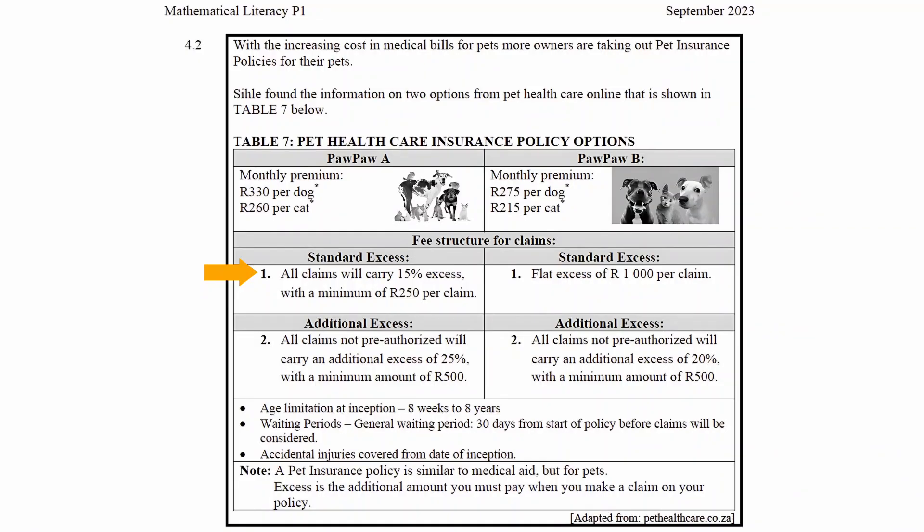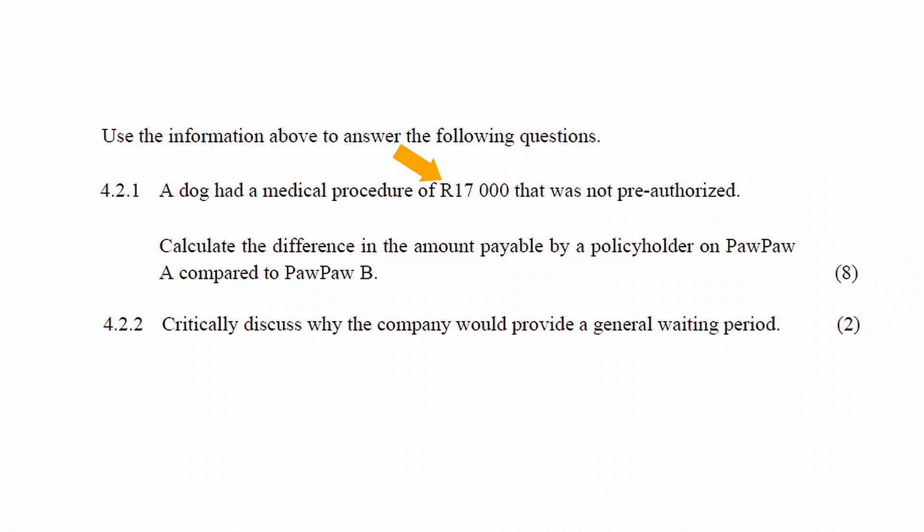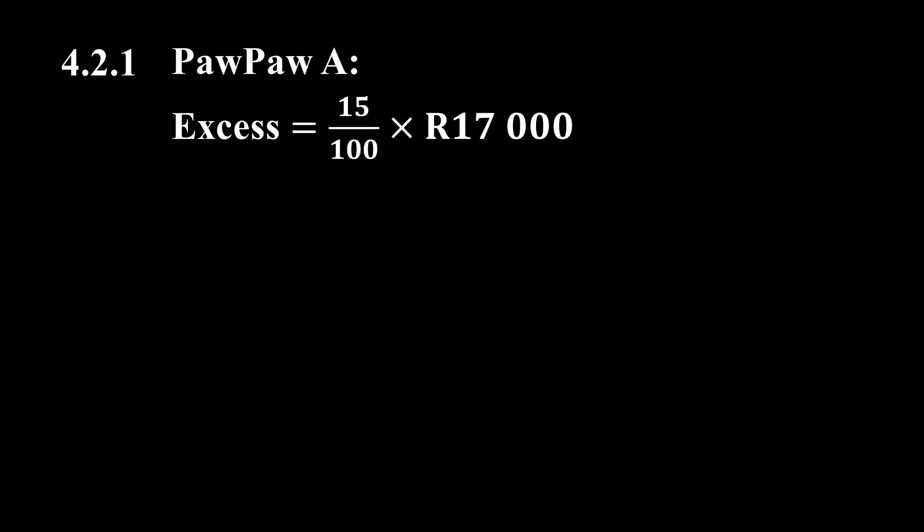First we will calculate the amount payable for Paw Paw A, then for Paw Paw B, and then find the difference. For Paw Paw A there is a standard excess of 15% with a minimum of 250 rand per claim. Since the claim is 17,000 rand, the excess is calculated as 15 divided by 100 multiplied by 17,000 rand, which equals 2,550 rand.